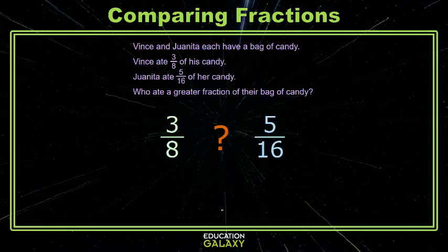Here, Vince and Juanita each have a bag of candy. Vince ate 3 eighths of his. Juanita ate 5 sixteenths of hers. And we want to know who ate the greater fraction of the candy.